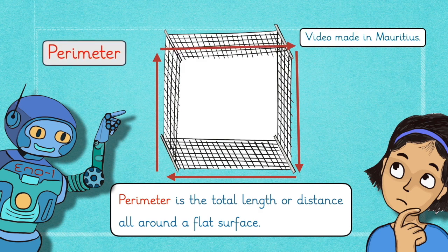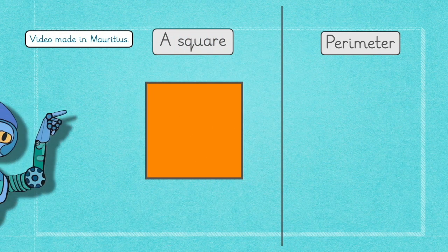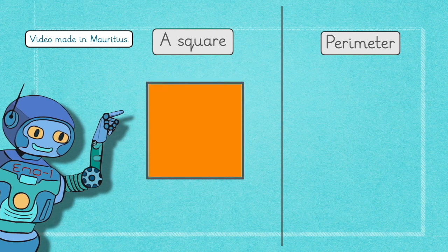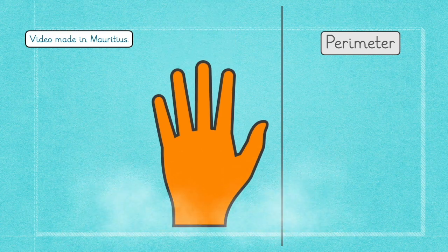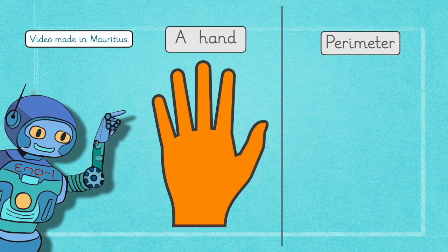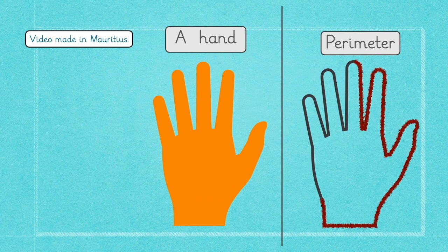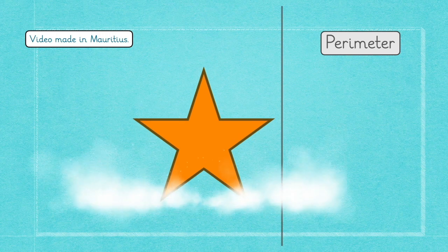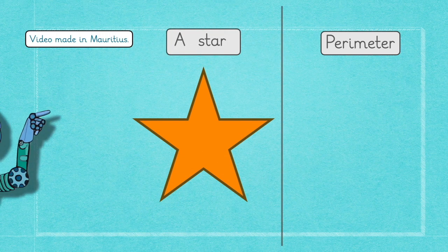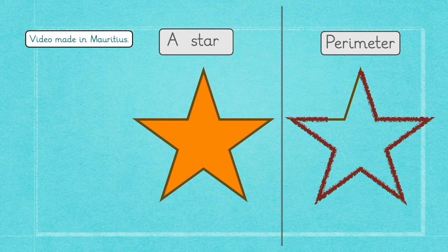Of course, Inouane. Lots of flat shapes have perimeters. Here is a square. And here is the perimeter of the square. Another example, a hand. You can even trace out the perimeter of the hand. Pupils, here is a perimeter of the hand. Another example can be the star. And on your right, you will find the perimeter of the star.